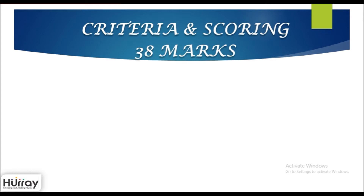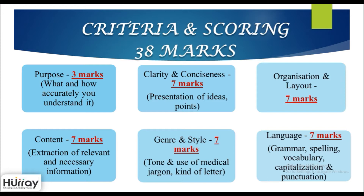The criteria and scoring are as follows. The total marks amount to 38. Out of this you have six major categories. Number one is purpose, for which you are allotted three marks. This basically is about what you're writing and how accurately you understand the task given to you.